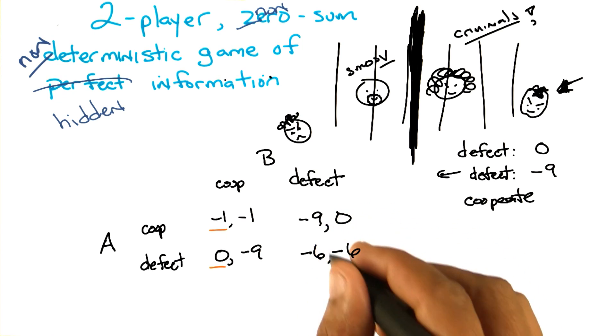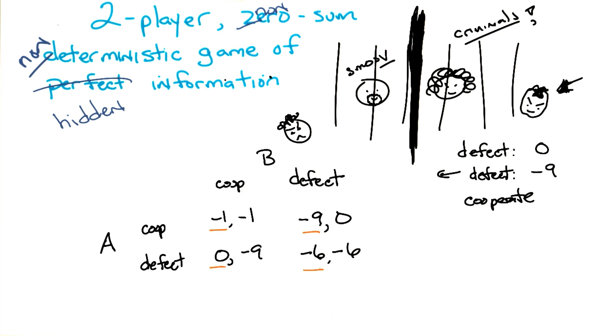If I look at it in this column, it's minus 9 or minus 6. Which number is bigger? Negative 6. Right.